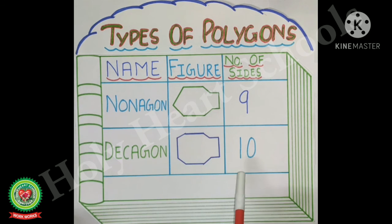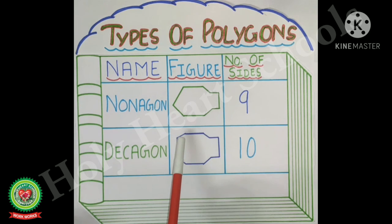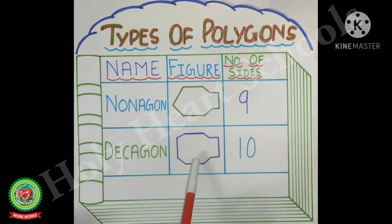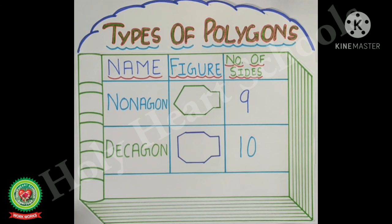The next type of polygon is the polygon which has ten sides. The figure has one, two, three, four, five, six, seven, eight, nine and ten sides. So it is called a decagon.